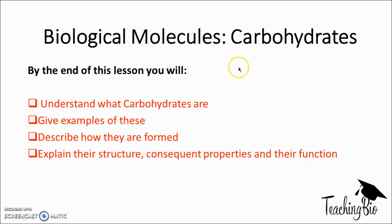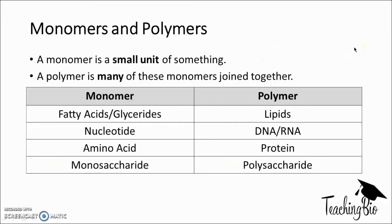Hello and welcome to TeachingBio. Today we're going to look at biological molecules and carbohydrates specifically, otherwise known as saccharides. Before we begin we need to understand what monomers and polymers are. A monomer is a small unit of something, whereas a polymer is many of these monomers joined together. So many monomers form a polymer.